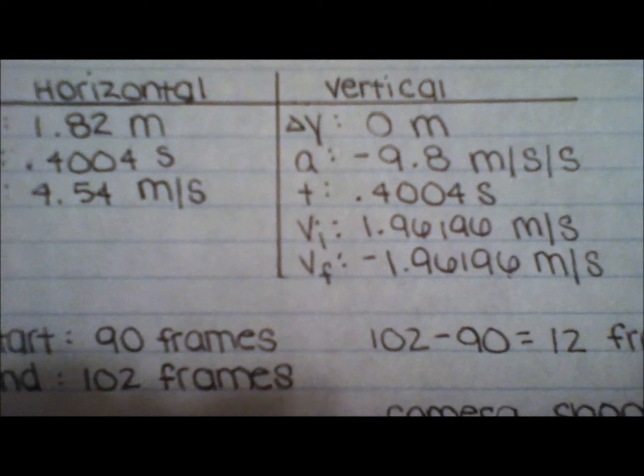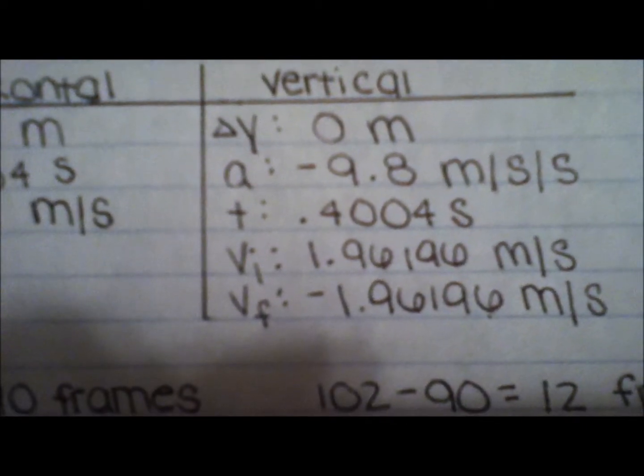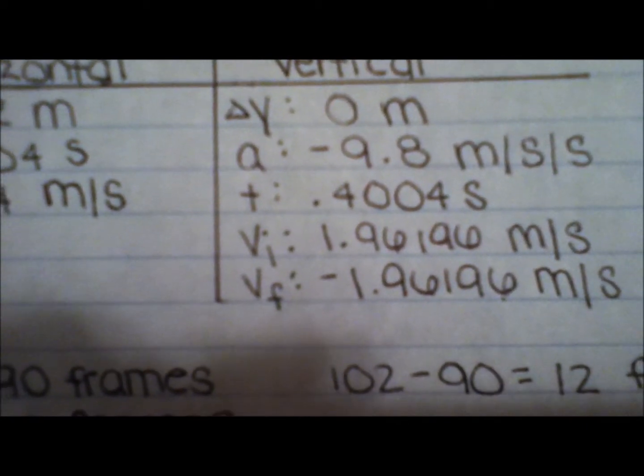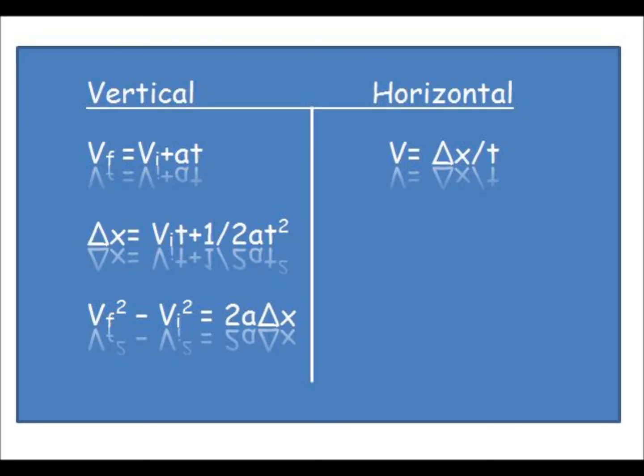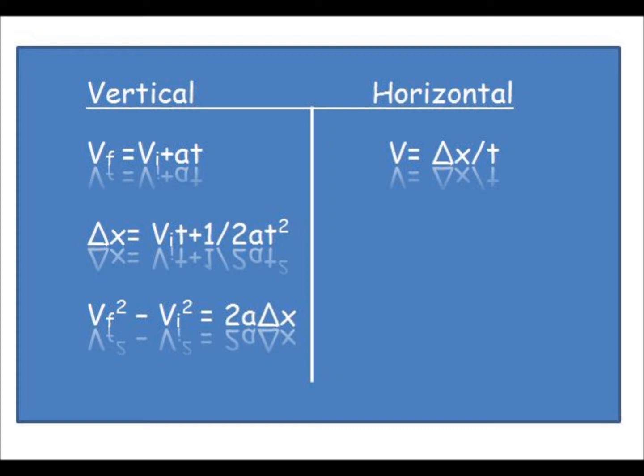Vertical motion and horizontal motion are independent of each other, and require different types of equations. Vertical motion requires constant acceleration equations, and horizontal motion requires the constant speed equation.